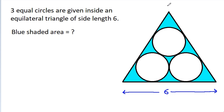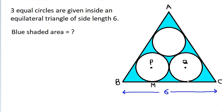Suppose the vertices are A, B, C. The center of the first circle is P, the center of the second circle is Q, and suppose this point is M and this point is N.